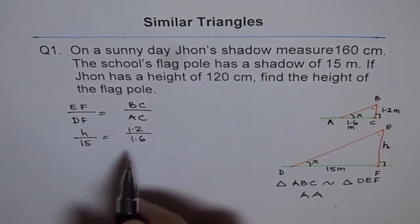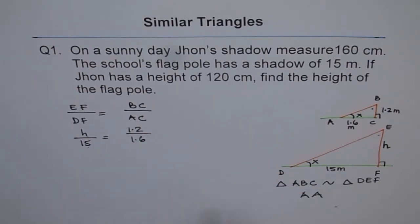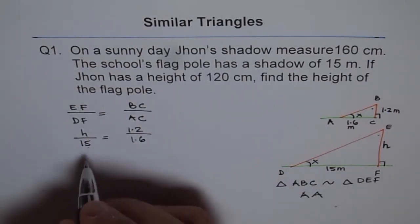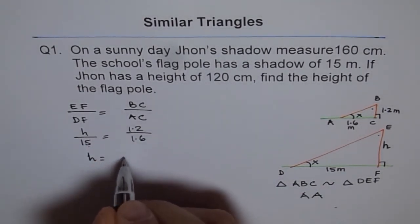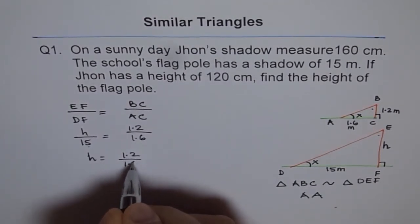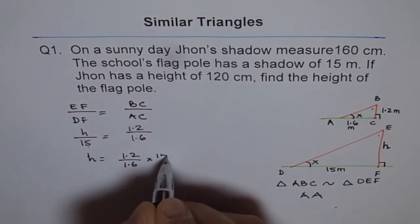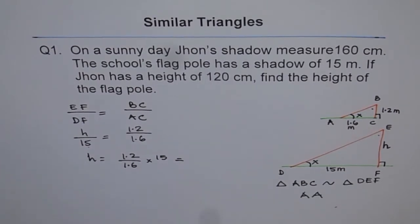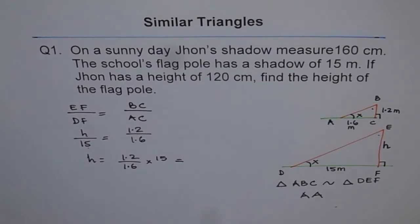Correct? Now from here, we can cross multiply and find what height of the flag is. So H equals to 1.2 divided by 1.6 times 15, right? Now we can use calculator to calculate our answer. So 1.2 divided by 1.6 times 15 equals to 11.25.